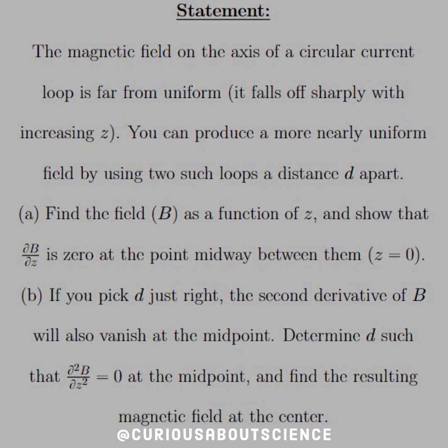The magnetic field on the axis of a circular current loop is far from uniform. It falls off sharply with increasing z.